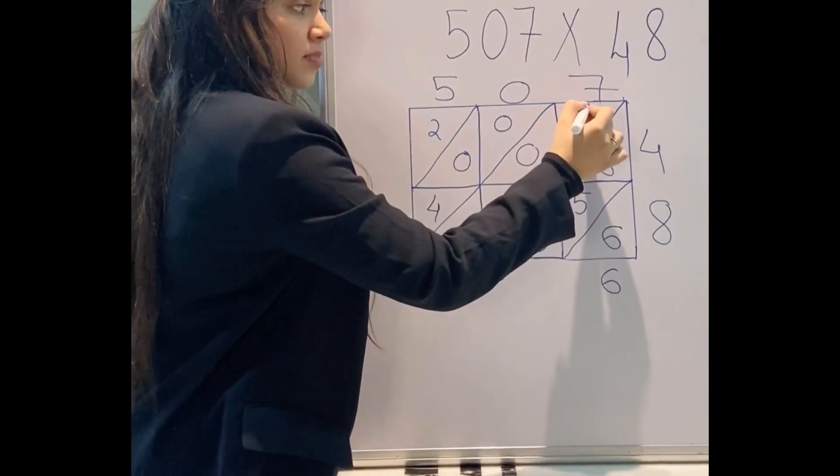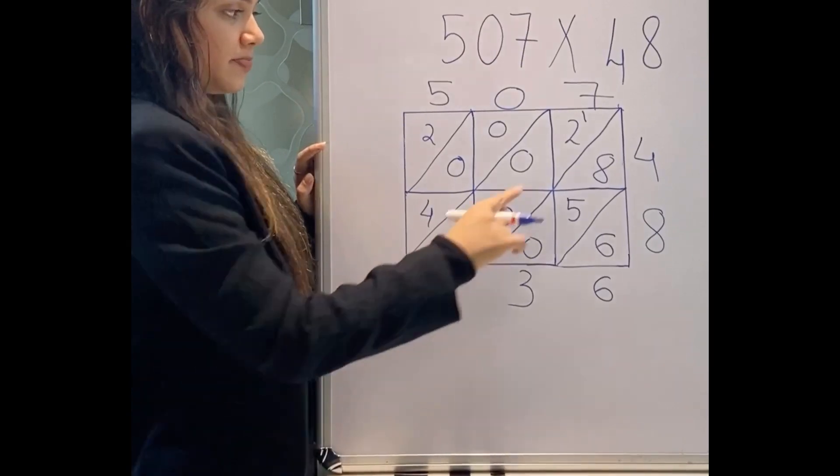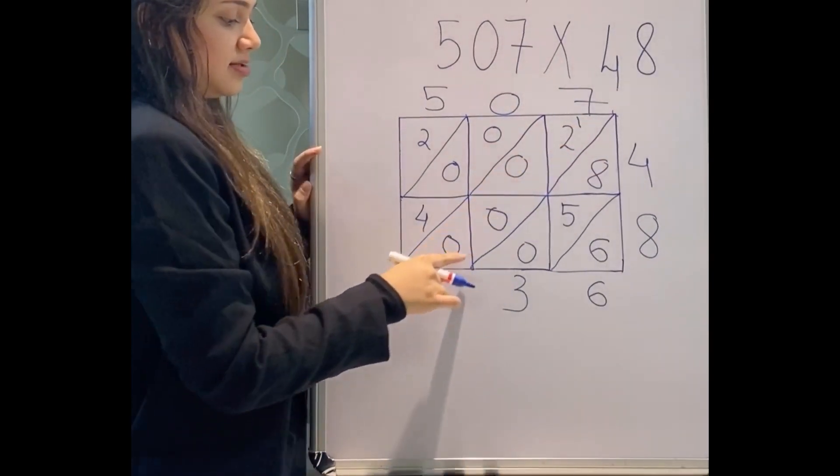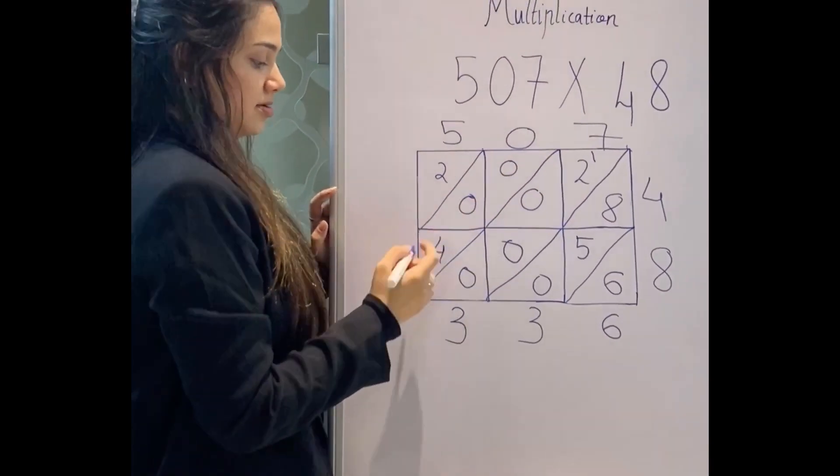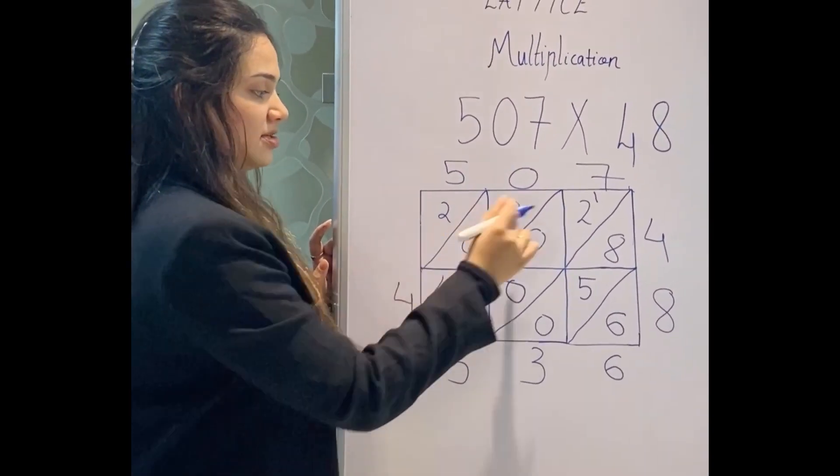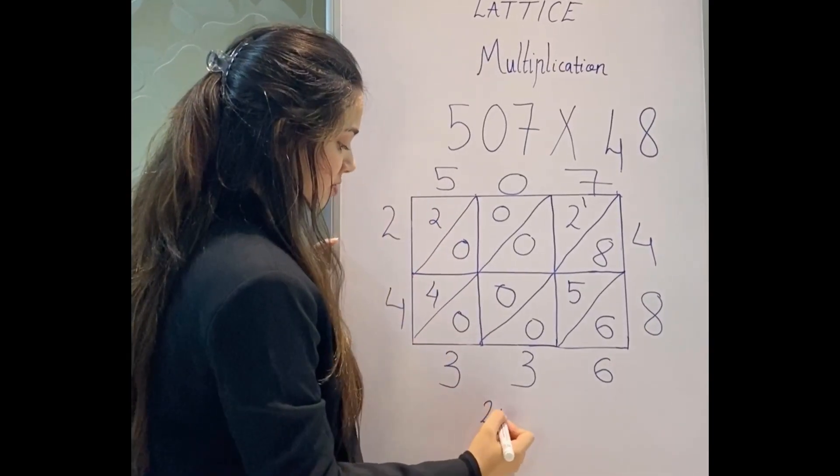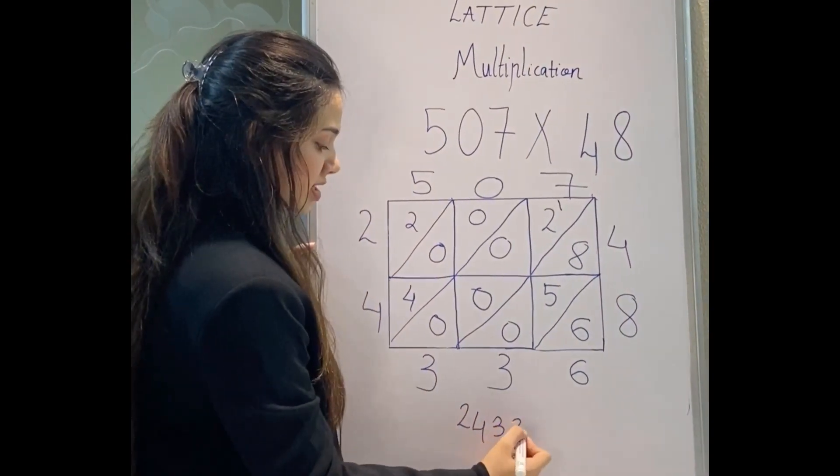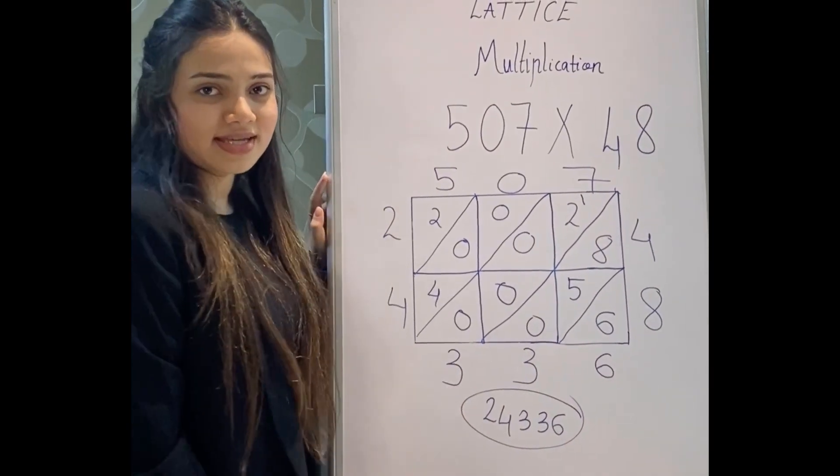Now 6 will be written as it is. This part you have to add: 0 + 5 = 5. 5 + 8 is 13. 1 will be carried here and 3 will be written here. Now 2 + 1 + all of this, so that's 3. So I write 3. And here it's 4. 4 + 0 + 0 is 4. And 2. So my answer is 24336.